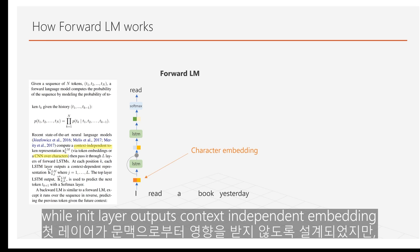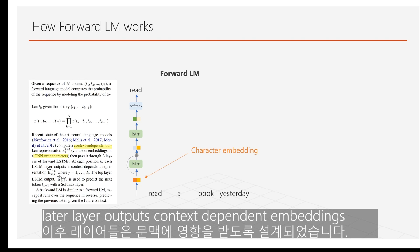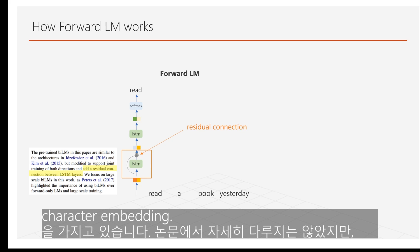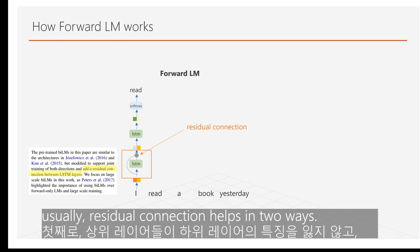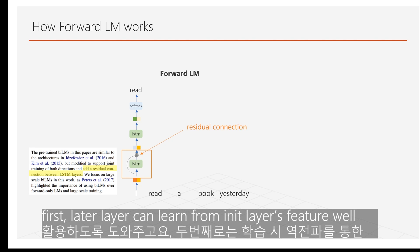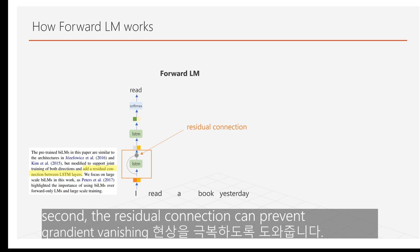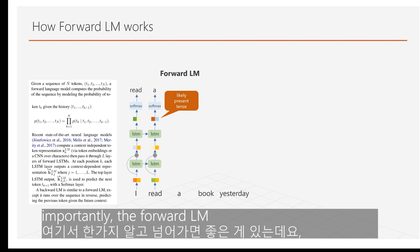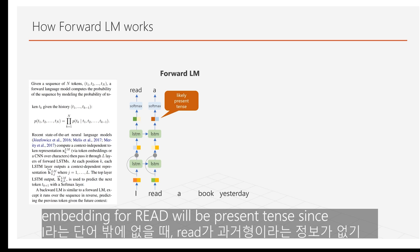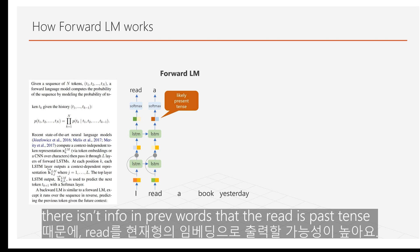While the initial layer embedding is context-independent, the later hidden layer outputs are context-dependent embeddings. The first LSTM output has a residual connection with the character embedding. Though the paper didn't specify why, residual connections typically help in two ways: first, later layers can better learn from initial layer features; second, during backpropagation, residual connections help prevent the gradient vanishing problem. In this forward LM, the embedding for 'read' will most likely be present tense since there is no signal from previous words that the sentence is past tense.